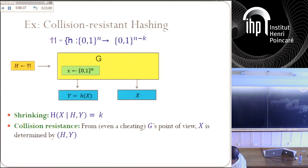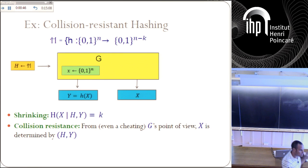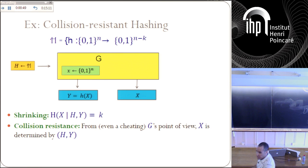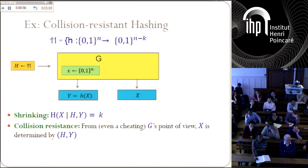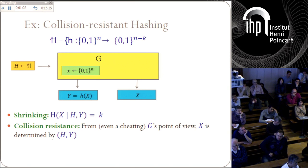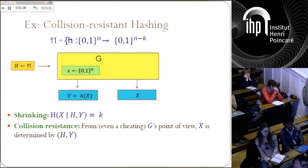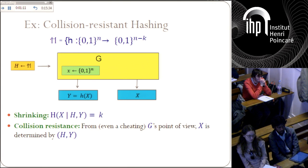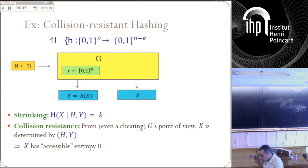This is a very simple game: you get the hash function, output h of x, and then output x. Since the hash function is shrinking, it is easy to argue that the entropy of X given the hash function and the hash value is k, if h is k-to-1. But what is the entropy of X from the generator's point of view? Think of g — or even a cheating g: g already output y, and now we output x, which is the preimage of y. What freedom does it have? I claim that there's no way it can output two strings that are both preimages of y. Why? Because if it could, it would break collision resistance — it would do it twice and find two strings.